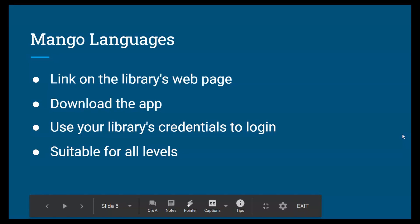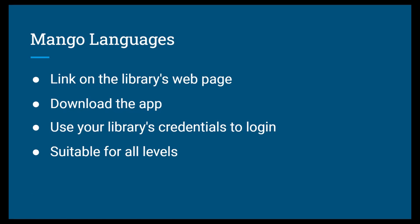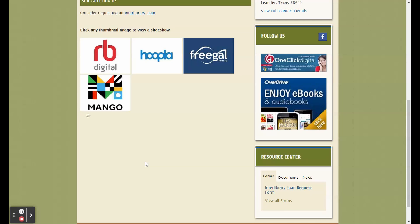The library homepage also includes a link to Mango Languages. This is a subscription purchased by the library and it offers courses in many languages, including English. Your library account will also give you access to the app version of this resource. The link is actually not working on the library homepage at the moment, but thanks to this assignment they are now aware and are currently working on fixing it.